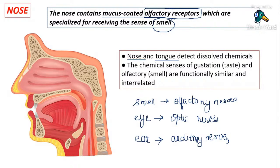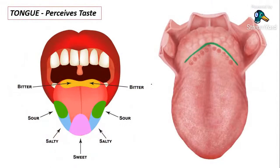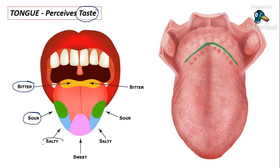The nose and tongue detect dissolved chemicals. The chemical senses of gustation (taste) and olfaction (smell) are similar and interrelated. When your mother cooks food in the kitchen, you smell it first, and then salivation begins — you start imagining how sweet or tasteful the food will be. These two senses are interconnected. The tongue mainly perceives taste such as bitter, sour, salty, and sweet.